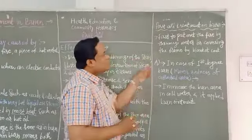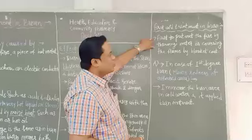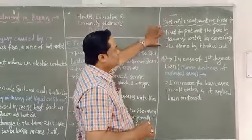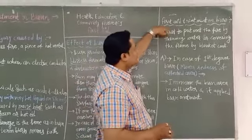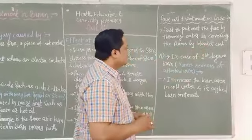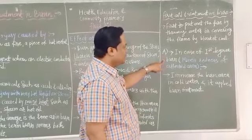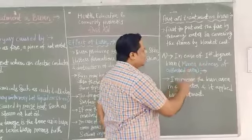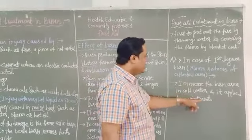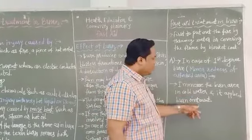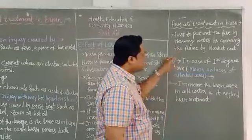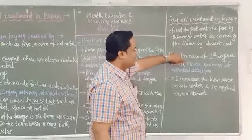For the first treatment of burns: first, put out the fire by throwing water or covering the flame with a blanket or coat. In the case of first-degree burn — which means minor redness of the affected area — this is the initial presentation to treat.